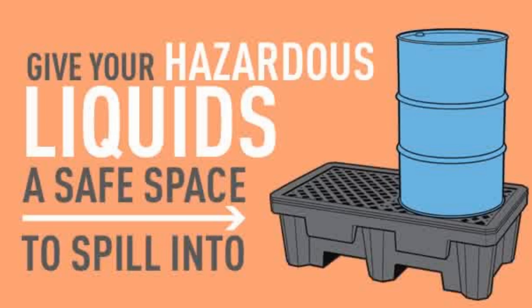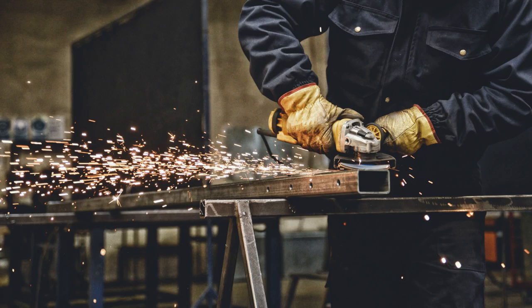Secondary containment includes a wide variety of systems depending on your needs. If you don't have permanent secondary containment infrastructure, containment tools should be kept near storage areas and while working off-site. You should always use tarps, containers, and vacuums to collect sanding and grinding waste.